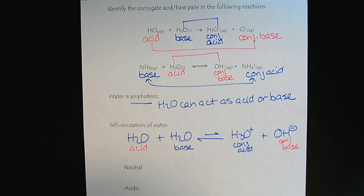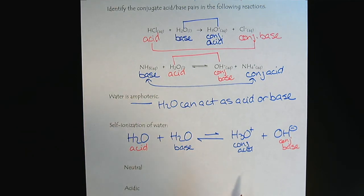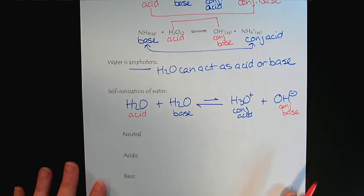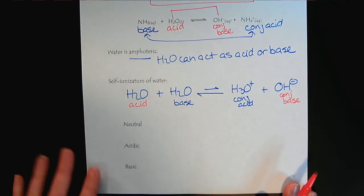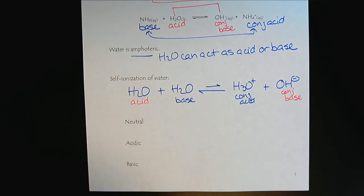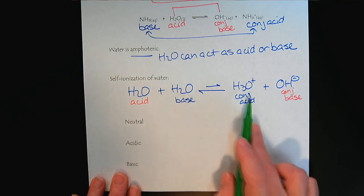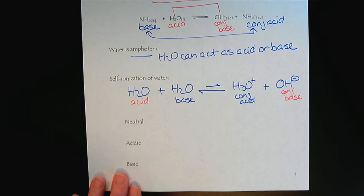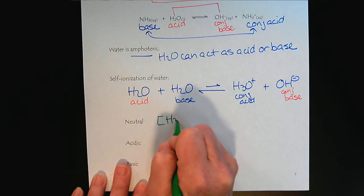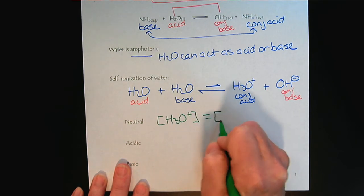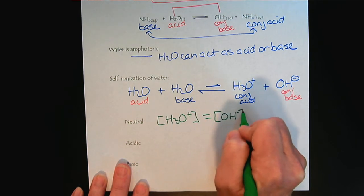So from here, we can develop the concepts of a solution being neutral, acidic, or basic. So, when we say a solution is neutral, we are going to say that the hydronium and the hydroxide concentrations are equal. So the concentration of hydronium equals the concentration of hydroxide.